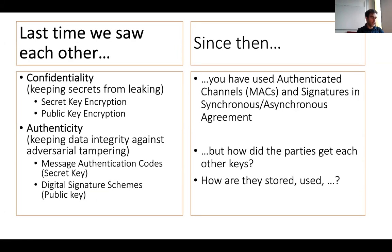Last time we were talking about cryptography, particularly two of the goals of cryptography: confidentiality and authenticity. Confidentiality was the goal of keeping secrets from leaking, and we saw how to use secret key encryption and public key encryption as solutions. Then there was the equally important but completely orthogonal goal of authenticity, which is to keep data integrity against adversarial tampering.